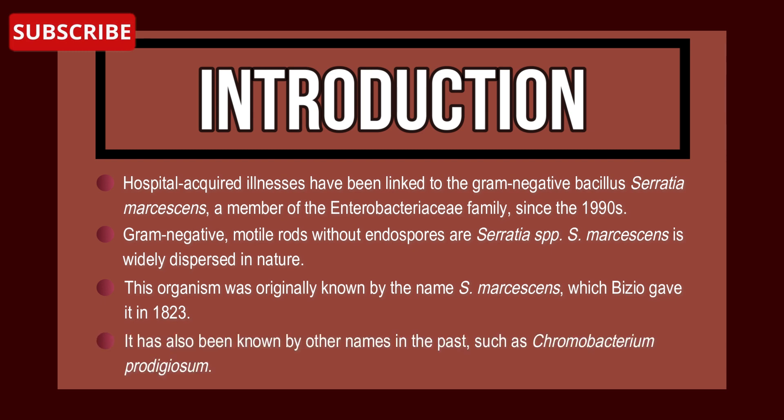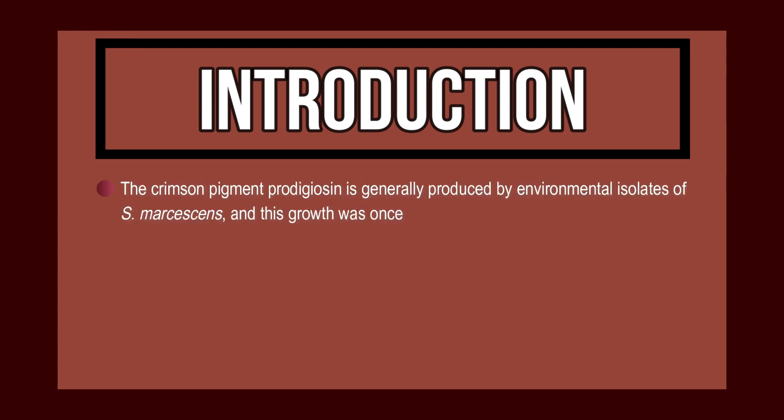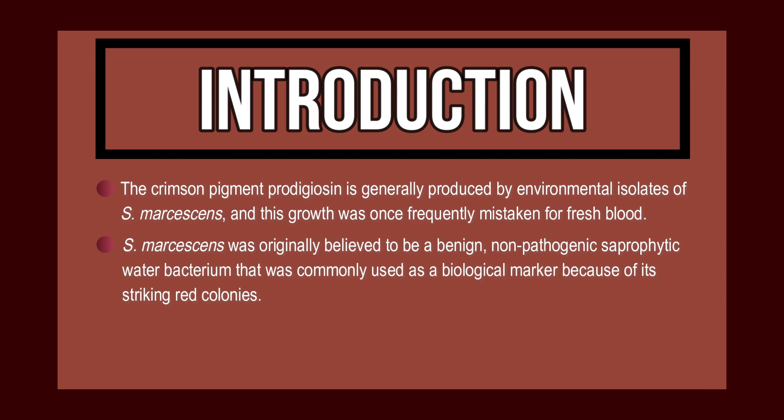This organism was originally known by the name Serratia marcescens, which Bizio gave it in 1823. It has also been known by other names in the past, such as Chromobacterium prodigiosum. The crimson pigment prodigiosin is generally produced by environmental isolates of Serratia marcescens, and this growth was once frequently mistaken for fresh blood.